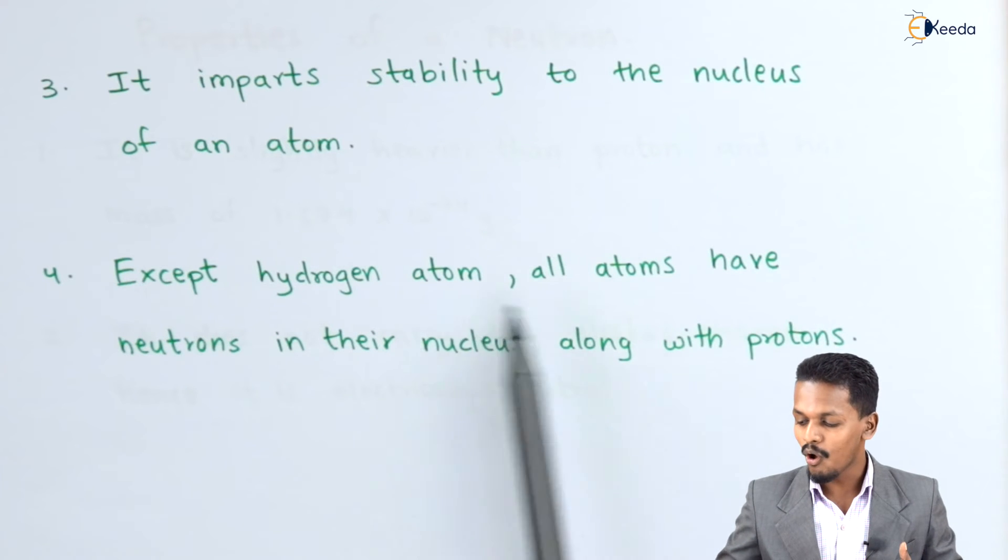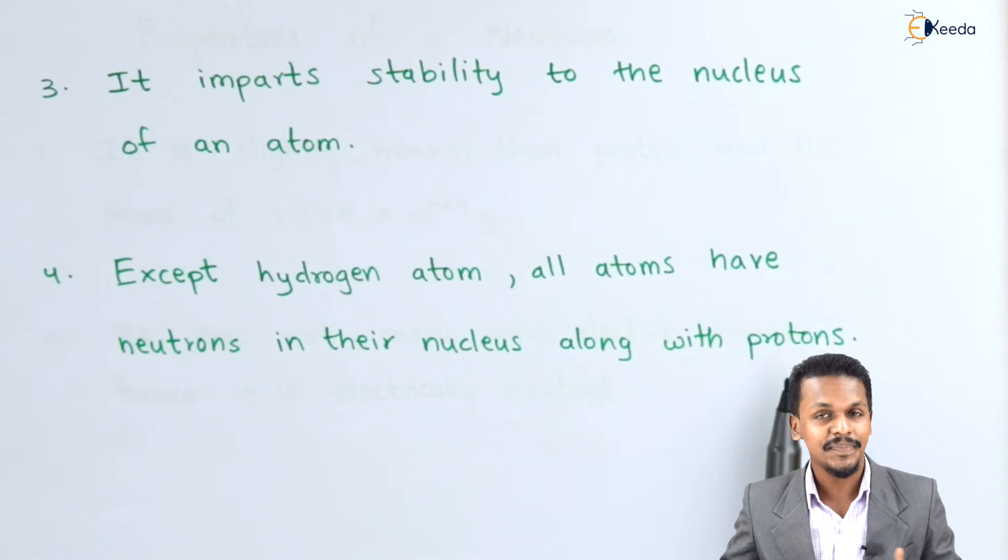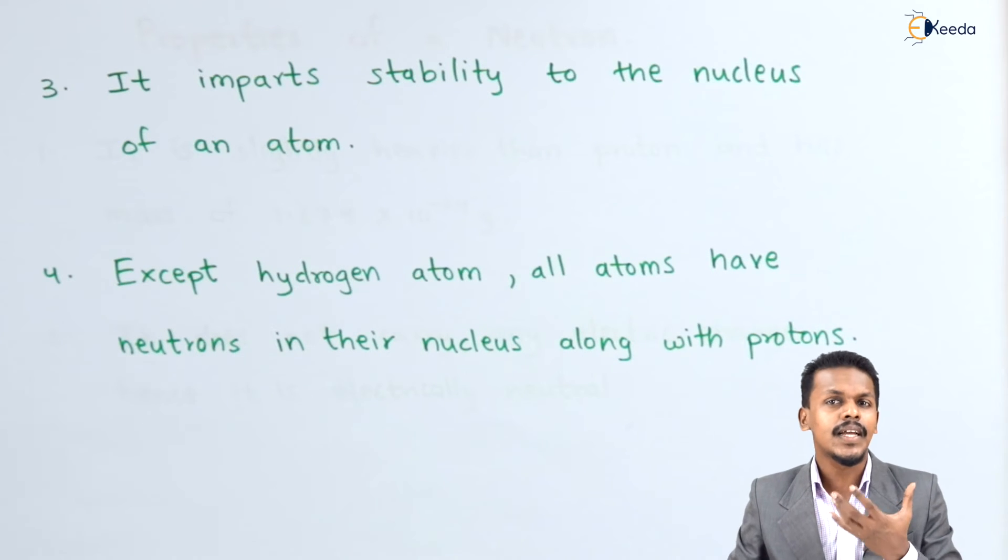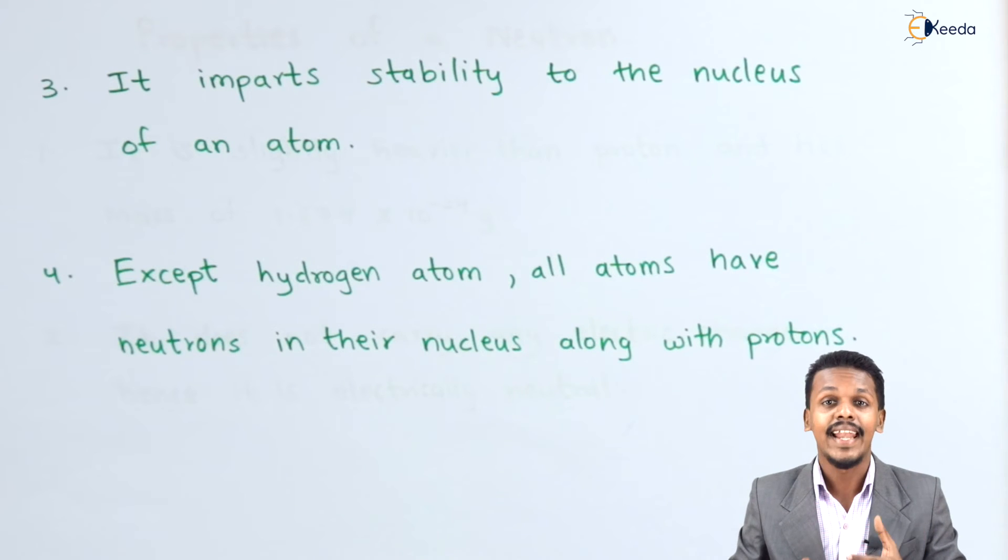The next point: except hydrogen atom, all atoms have neutrons in their nucleus along with protons. Consider an example—carbon has an atomic number of 6 and atomic mass of 12.